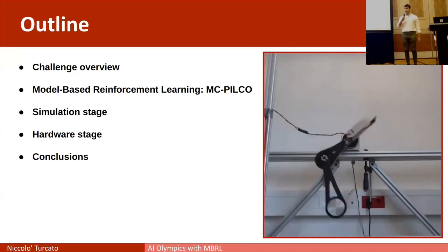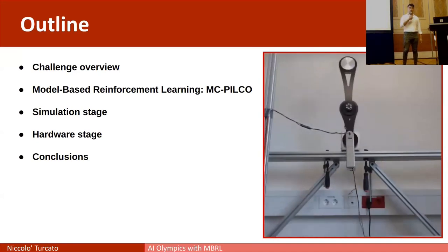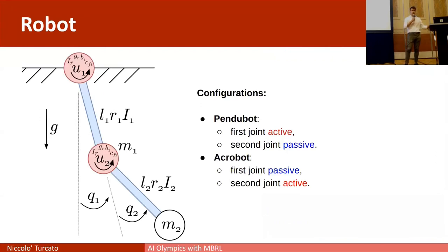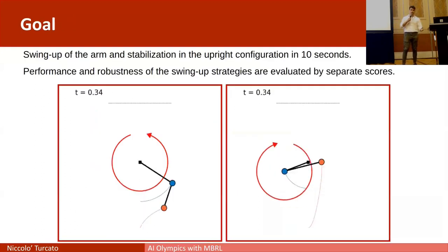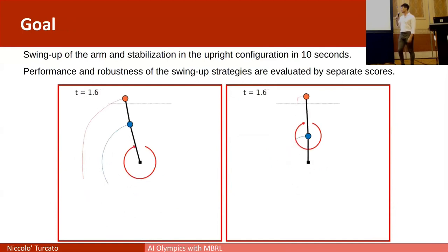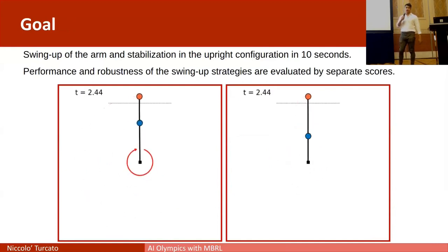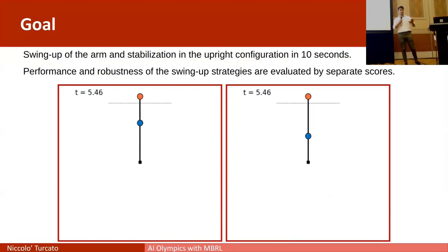The challenge considers a two-degrees-of-freedom robot under the effect of gravity in two configurations. The goal is to develop a controller for the swing-up and stabilization in the upright position of both systems, in simulation and on real hardware. In each stage there is a performance analysis and robustness score.